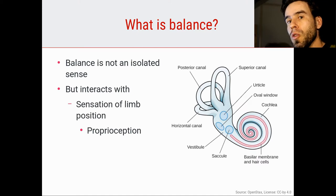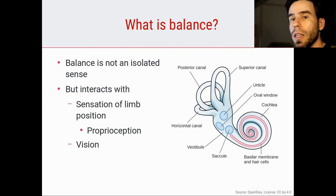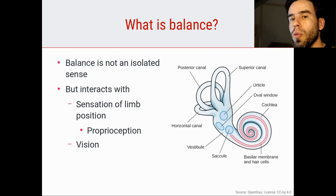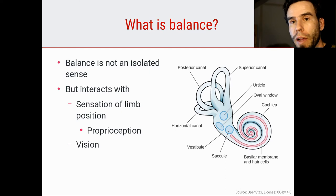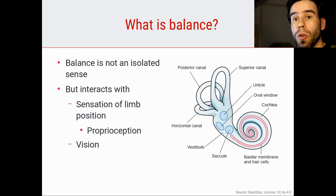There's also a very strong interaction between vision and our sense of balance. For example, in an airplane where your vision tells you that you're very stable but your sense of balance tells you that you're falling or moving upwards, that can be very disturbing. Conversely, in a driving simulator where your vision tells you that you're moving and accelerating but your sense of balance is not cooperating, that can be quite nauseating and make you quite sick.